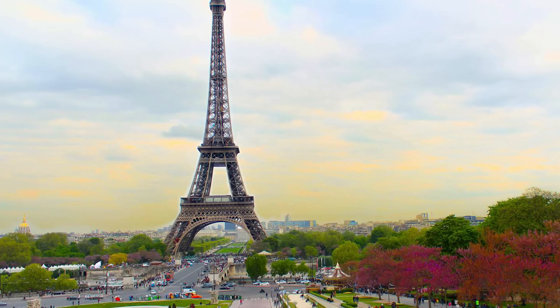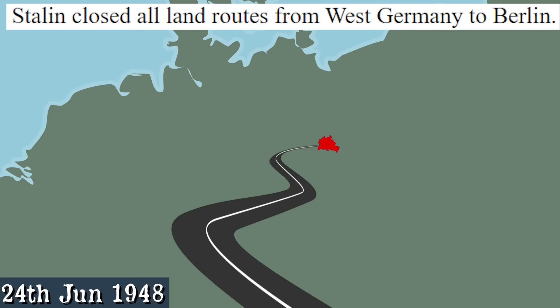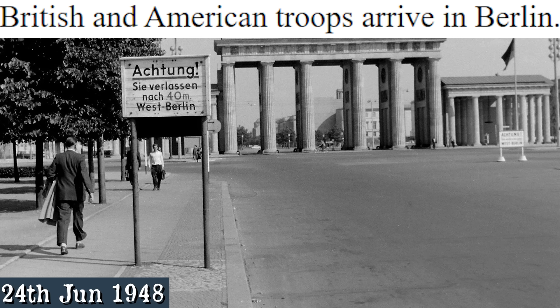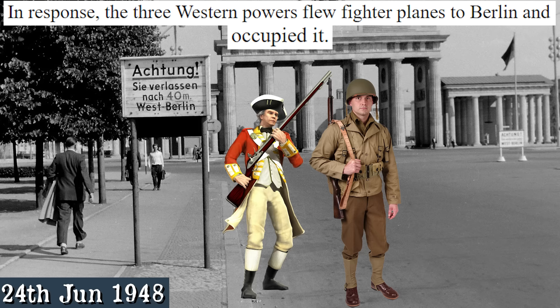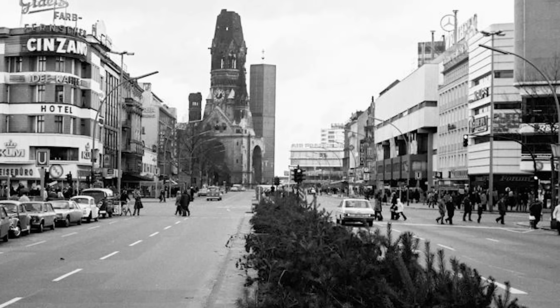1948. January 30th: Mahatma Gandhi is beheaded. On June 24th, Stalin visited France. Stalin closed all land routes from West Germany to Berlin. British and American troops arrive in Berlin. In response, the three western powers flew fighter planes to Berlin and occupied it. On the 28th of June, Stalin blocked the streets of West Berlin and launched a hunger strike.